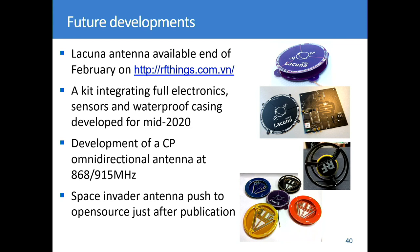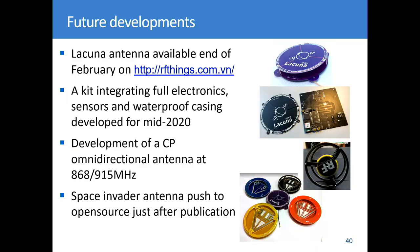For future developments, this antenna will be available on Arafing's website at the end of February if you are interested in testing. We are also developing with Lacuna a kit integrating the antenna and electronics with a waterproof casing for outdoor applications, available around mid-2020. We are also working on a circular polarised omnidirectional antenna — a direct replacement for a classical linear polarised antenna that can radiate 3 dB more. This space invader antenna will be pushed to open source, and my student Jonel will integrate the electronics, making it available for makers who want to play with satellites.